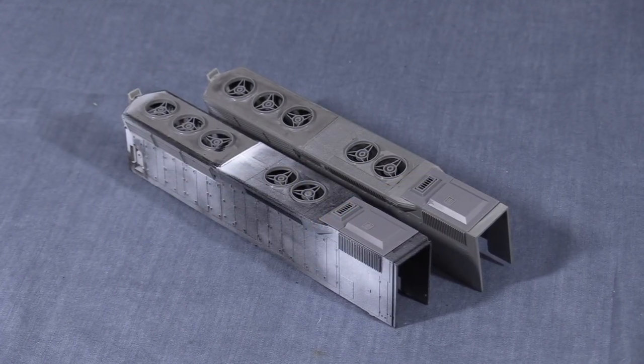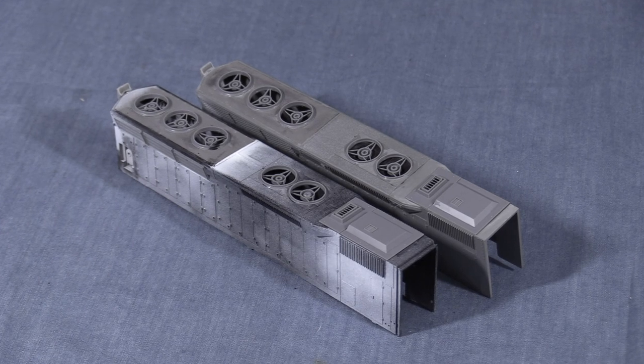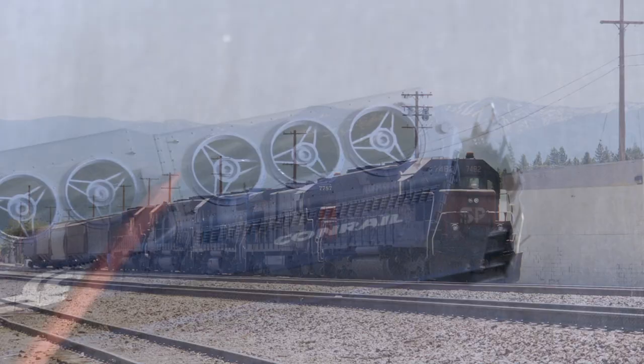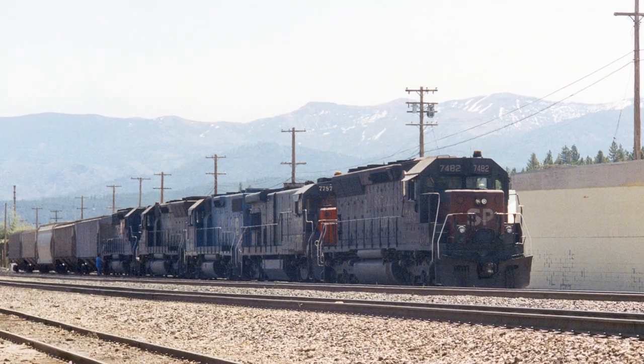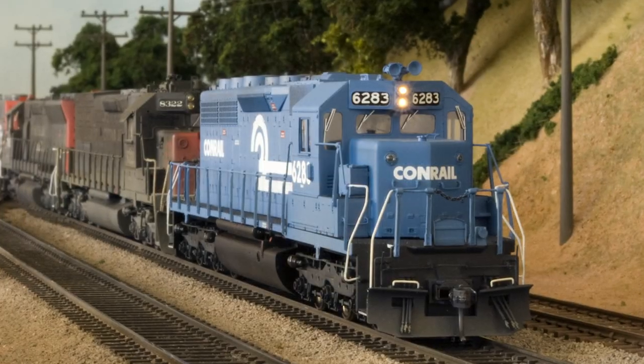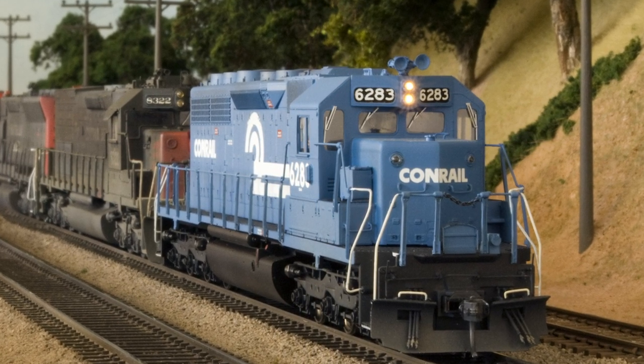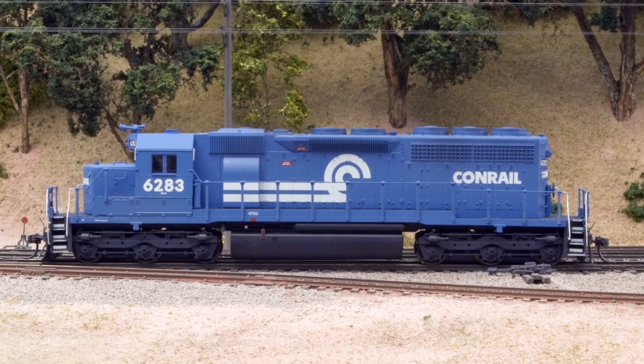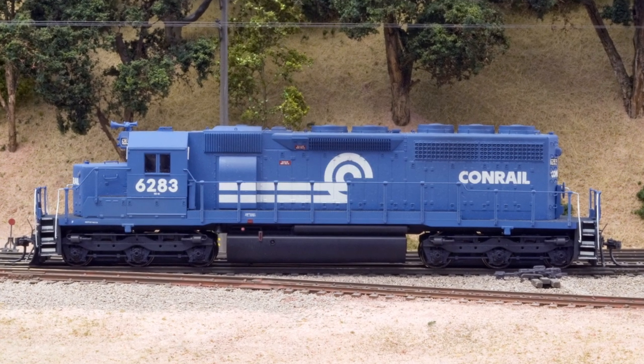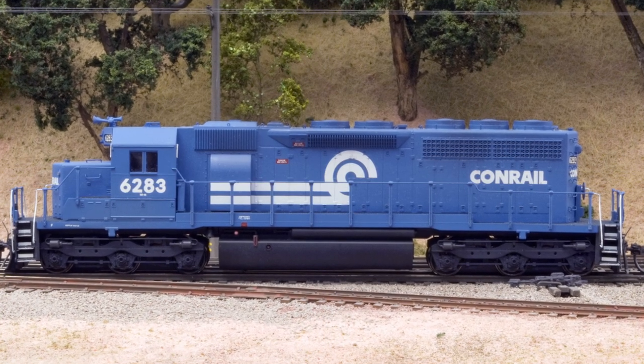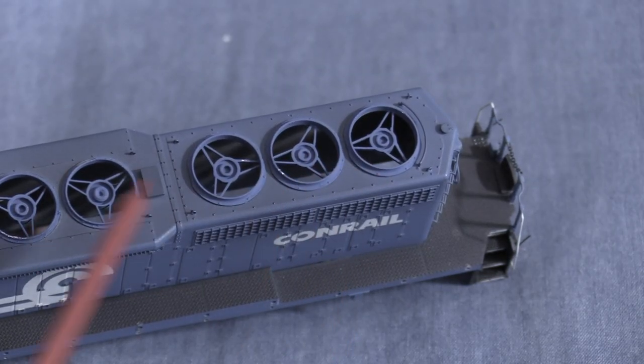In the last episode, I added more detail to the long hoods of both SP SD45Rs and added cannon fans to the Conrail SD40. The SP and Cotton Belt engines are being built from the ground up, but the Conrail engine is one that I had already painted and detailed before starting this build.